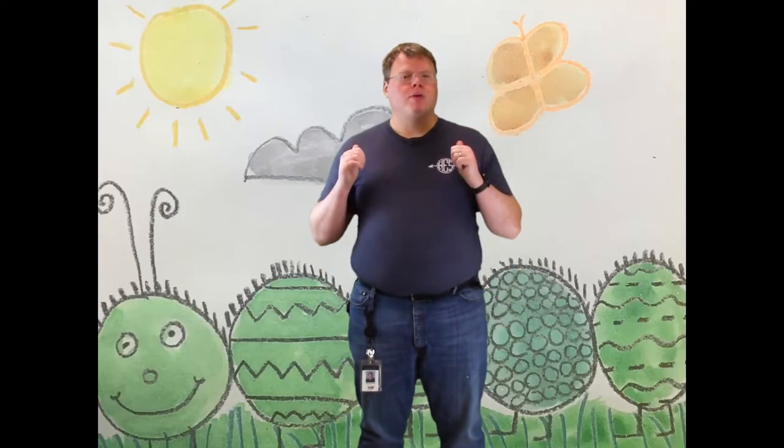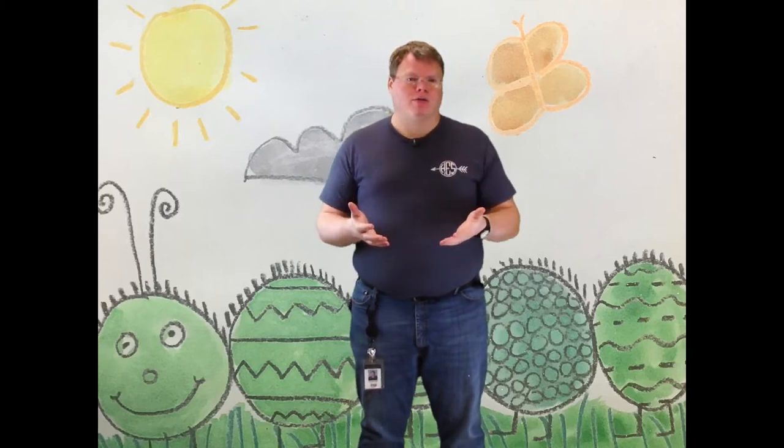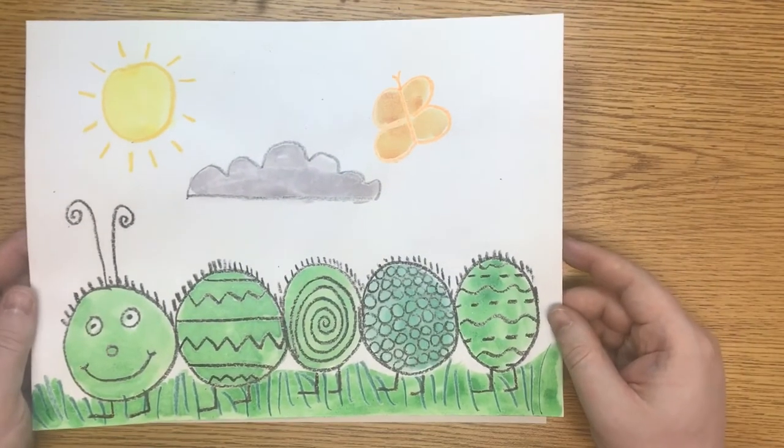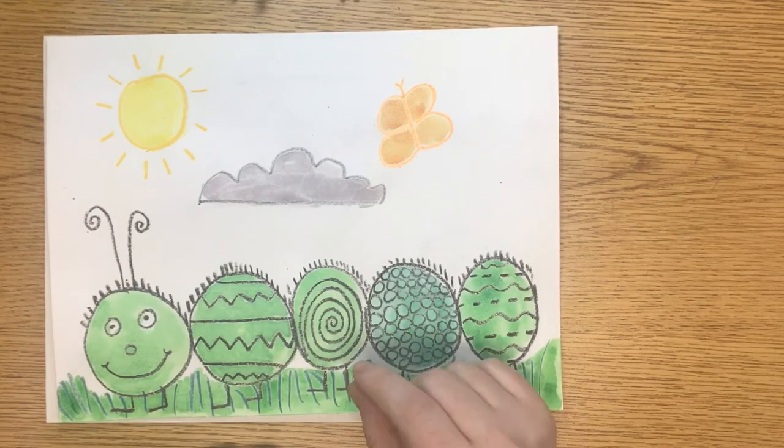When we make our caterpillar drawings today we need to make sure that they also have a background. We're going to be creating a caterpillar drawing and there are a lot of parts of this picture that are going to have patterns or repetition in them. We talked about patterns in our last lesson so you should already know what that means. A pattern is anytime something repeats.